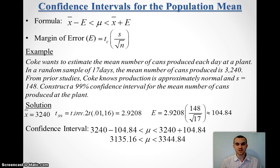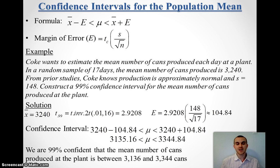So, when I'm talking about cans, which are discrete items, I need to make sure I'm inside those values. So, I would say that we are 99% confident that the mean number of cans produced in the plant is between 3,136 and 3,344 cans.